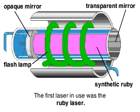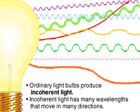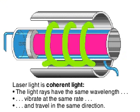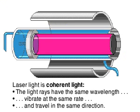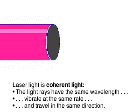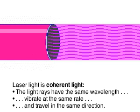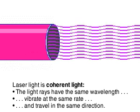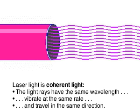Coiled around the bar is a flash lamp. Ordinary light is incoherent, with many wavelengths moving in different directions. A laser generates coherent light, which means its waves move in unison at the same wavelength — a light of singular intensity and power.